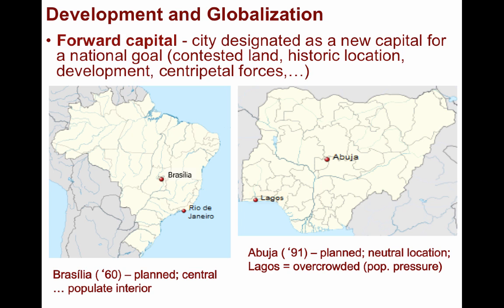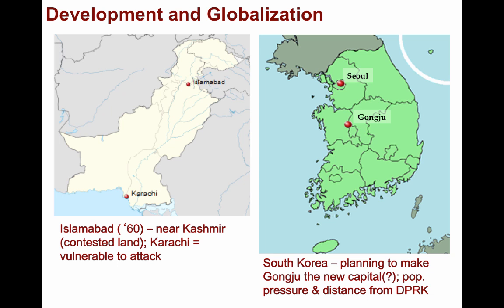Not all forward capitals are built from the ground up — many are already existing cities. This is the case with Pakistan, whose capital used to be Karachi, located adjacent to the Arabian Sea. Due to conflicts with India, they designated Islamabad as their new capital in 1960, strategically chosen due to its proximity to the contested Kashmir region and since Karachi is vulnerable to attack from ship bombardment. One last example is a potential forward capital in South Korea. Seoul is their current capital, and attempts have been made to designate Gangju as their new capital, since it is further south and may help with more even development and population distribution. Not coincidentally, Gangju is also outside of North Korea's artillery fire range.